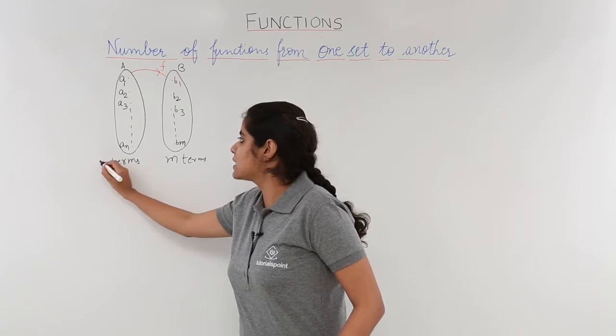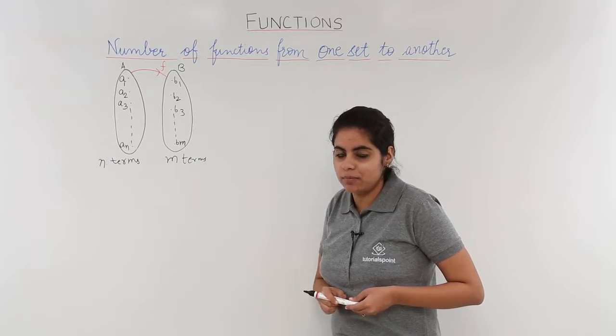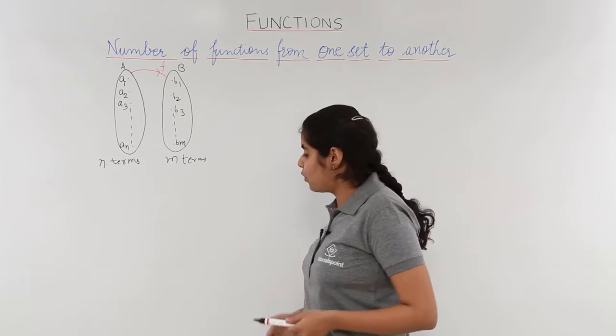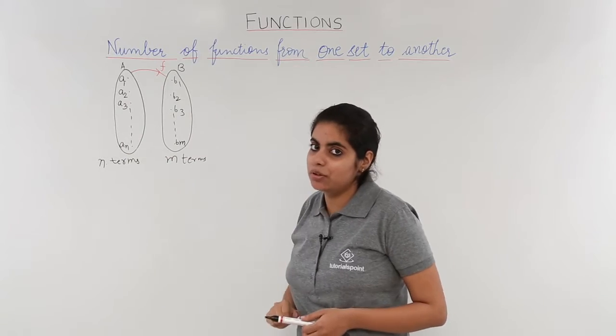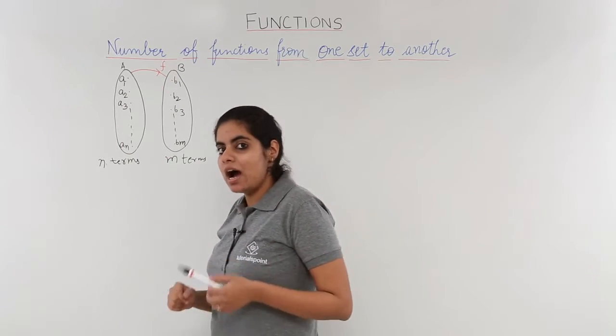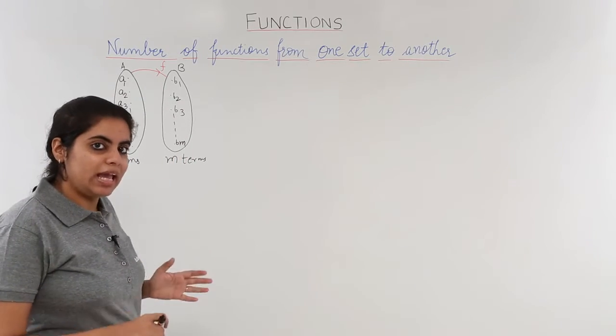So how many terms here? It is N terms, and how many terms here? It is M terms. And we have a function f from A to B already given to me. Let's see how to find out the number of functions from A to B.